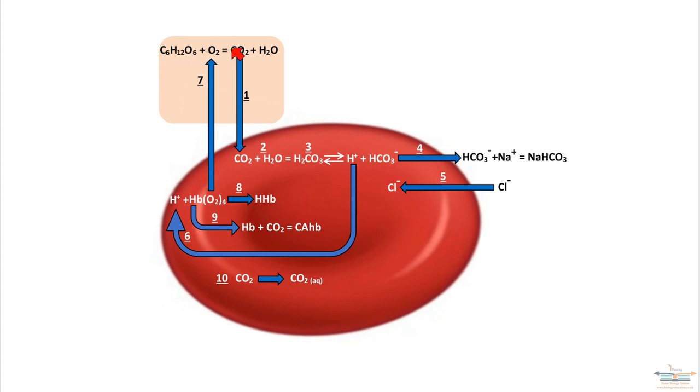So I just want to go through it, hopefully help you out with it a bit. In the top box here, this is a cell that is undergoing aerobic respiration. There's the equation and obviously the important parts are the oxygen and the CO2. So number one, this is where the carbon dioxide diffuses into the red blood cell.